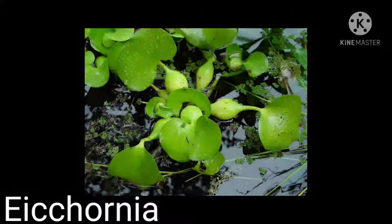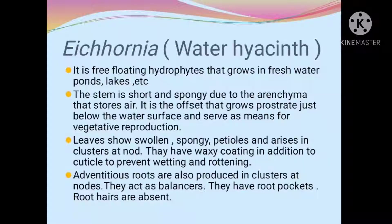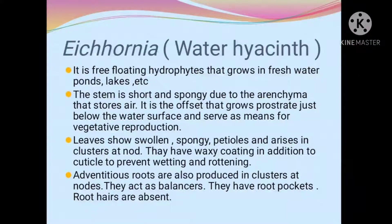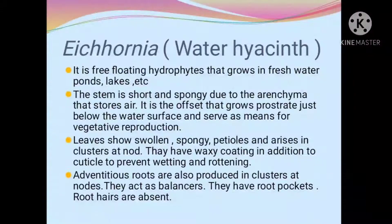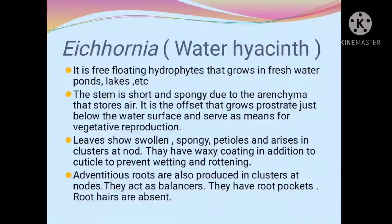The next specimen is Eichornia, also known as water hyacinth. It is a free-floating hydrophyte that grows in fresh water ponds, lakes, etc. The stem is short and spongy due to aerenchyma that stores air. It is the offset that grows prostrate just below the water surface and serves as a means for vegetative reproduction. Leaves show swollen, spongy petioles and arise in clusters at nodes. They have a waxy coating in addition to cuticle to prevent wetting and rotting. Adventitious roots are also produced in clusters at nodes — they act as balancers and have root pockets. Root hairs are absent.